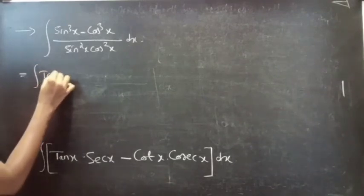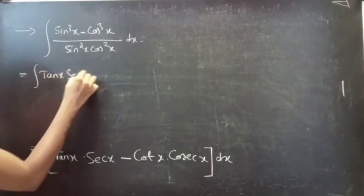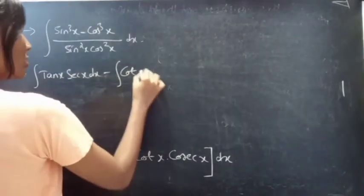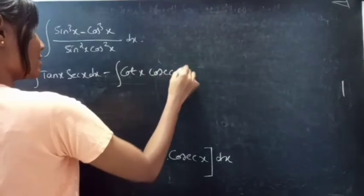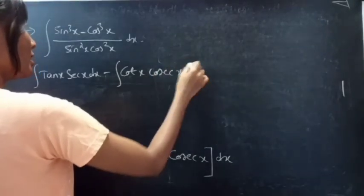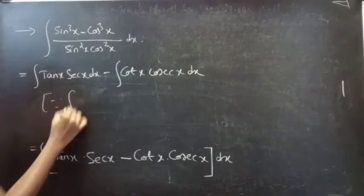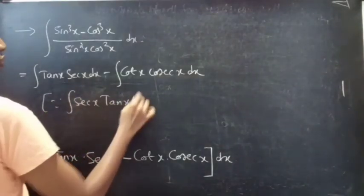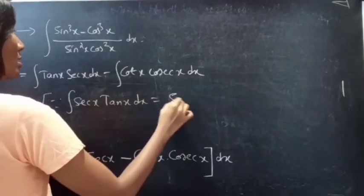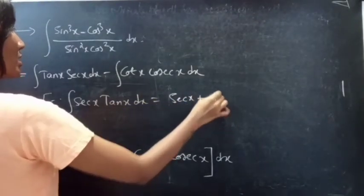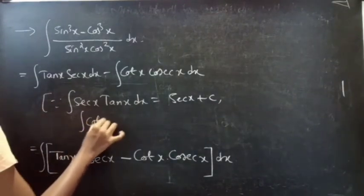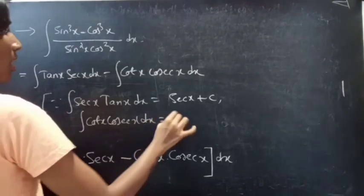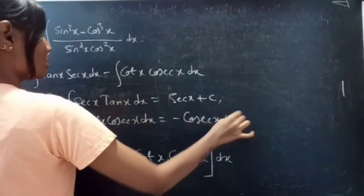This equals the integral of tan x · sec x dx, minus the integral of cot x · csc x dx. We know that the integral of sec x · tan x dx equals sec x + C, and the integral of cot x · csc x dx equals minus csc x + C.